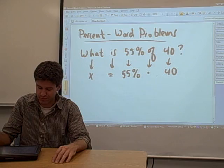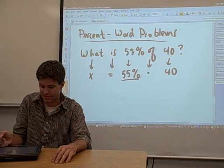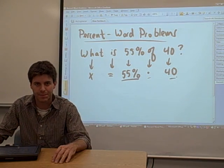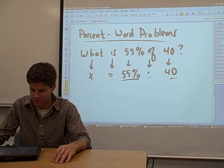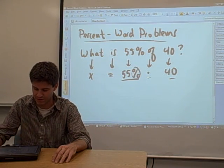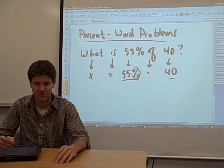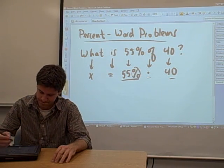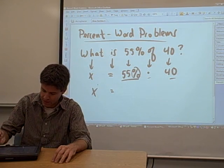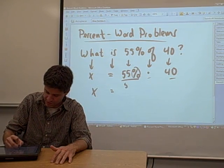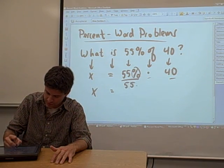So we're almost finished. Basically, what we're going to do is we're going to multiply 55% times 40. You can't really multiply a percent if you have a percent in this equation. So what you need to do is convert this percent into a fraction. It's pretty simple to do. You know how to convert a percentage into a fraction. Just put it over 100.